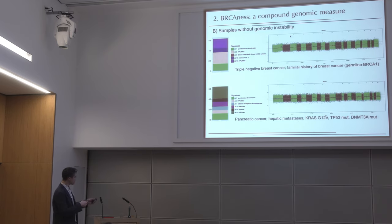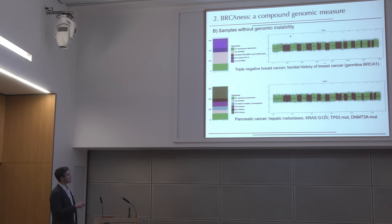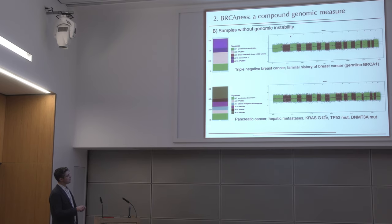Here is another case that is BRCAness negative: we do not have signature 3, we have a flat genome with no large copy number events. Everything fits together — this is a true negative case with no mutations in the BRCA genes whatsoever.